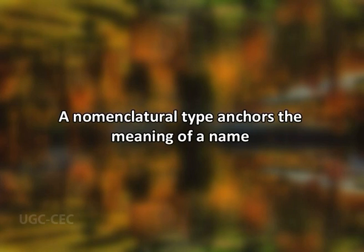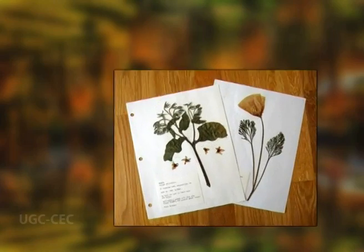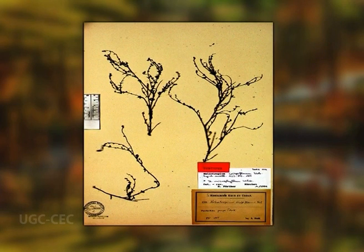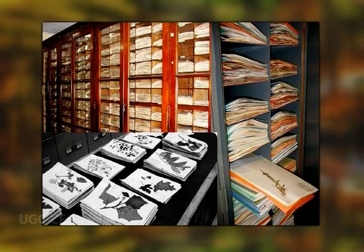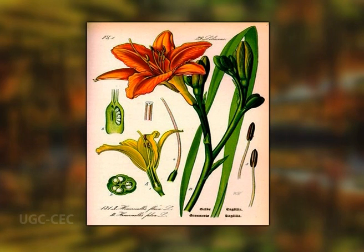A nomenclatural type anchors the meaning of the name. If there is an argument as to what kind of plant the author meant by a particular name, one examines the type specimen. A nomenclatural type is generally a specimen, for example a standard herbarium sheet, a real plant, or one or more parts of a plant, or a collection of small plants dead and kept safe in a herbarium. The type need not always be a herbarium specimen sheet or a plant — a detailed drawing, painting, etc.